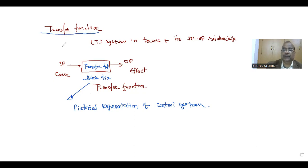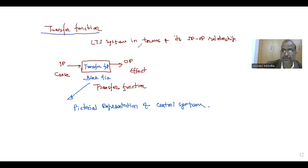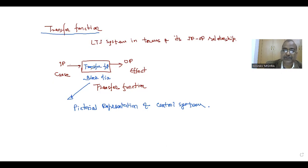Transfer function is a convenient way to represent an LTI system — linear time invariant system — in terms of its input and output relationship. If we have an input applied to some system, it will produce an output through the transfer operation. That transfer operation is termed as the transfer function.